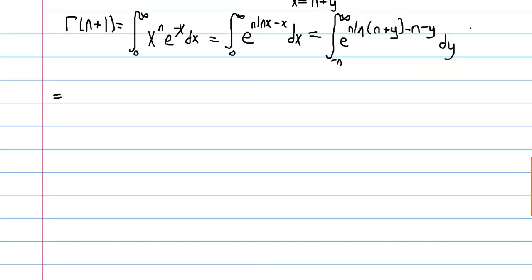we can take this e to the negative n term, we can just factor that out of the integral. Similarly, we're going to factor n out of this natural log. Now, how does that work? Well, we'll get n times 1 plus y over n inside of the natural log.